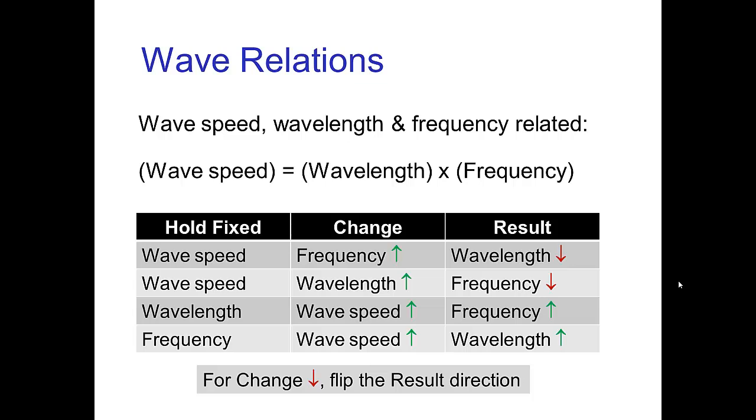As I said, the wave speed, wavelength, and frequency are related, and the mathematical relationship is that the wave speed equals the product of wavelength times frequency. But this equation is less important than the consequences of this equation, which are how do wave speed, wavelength, and frequency vary if we change one of those three.